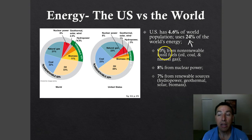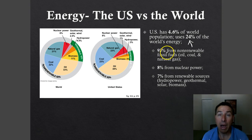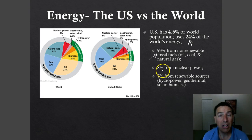Our energy mostly comes from non-renewable sources here in the United States — 93% from fossil fuels: oil, coal, and natural gas. This is a huge concern because that fuel source is eventually going to run out. In the future we're going to have to find a replacement for 93% of our energy use here in the United States, and that's kind of scary if you think about it.